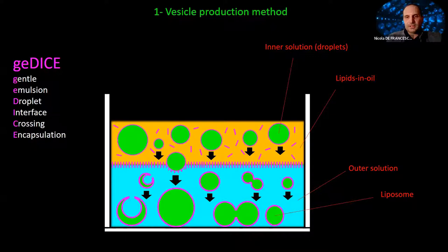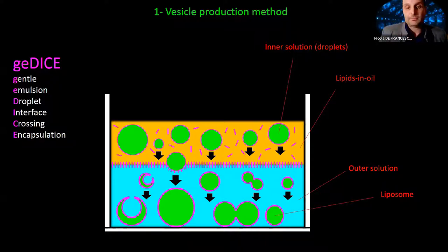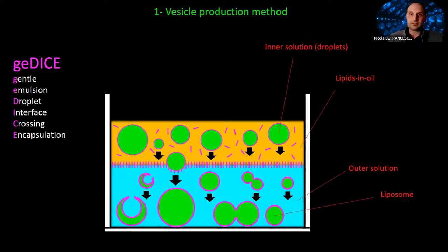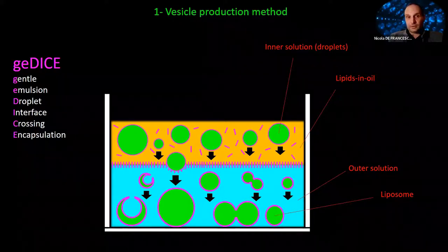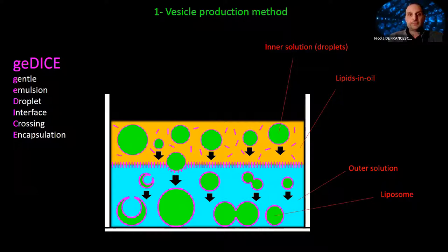To preserve these shapes, I introduced changes in the basic cDICE technique and call this variant Gentle Emulsion Droplet Interface crossing Encapsulation, or GE-DICE. In GE-DICE, the droplets are deposited in a non-rotating chamber and simply sink by gravity, eventually crossing the interface and becoming liposomes. This is similar to the old inverted emulsion method, but using the cDICE lipid preparation and reagents. The key advantage is that this makes liposome formation slow and gentle — no pipetting needed — allowing the membrane to deform and preserving fragile membrane structures.